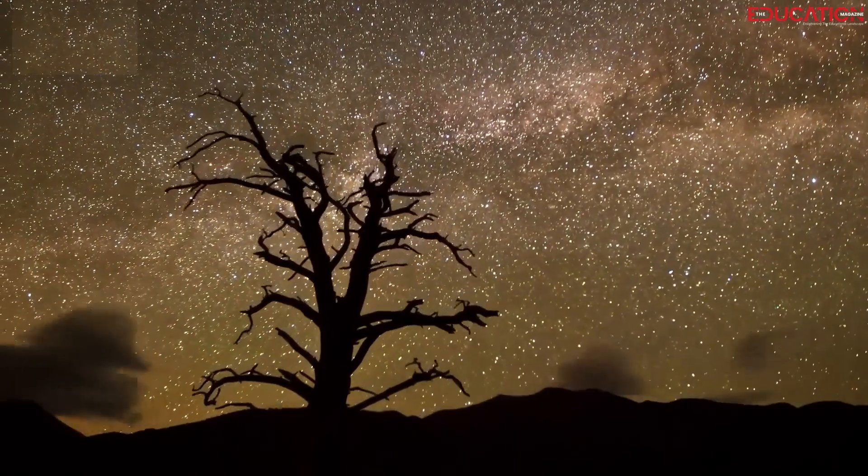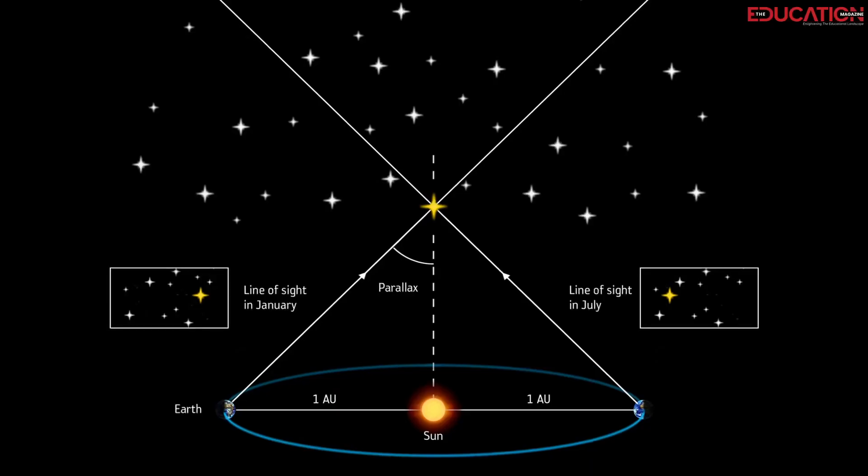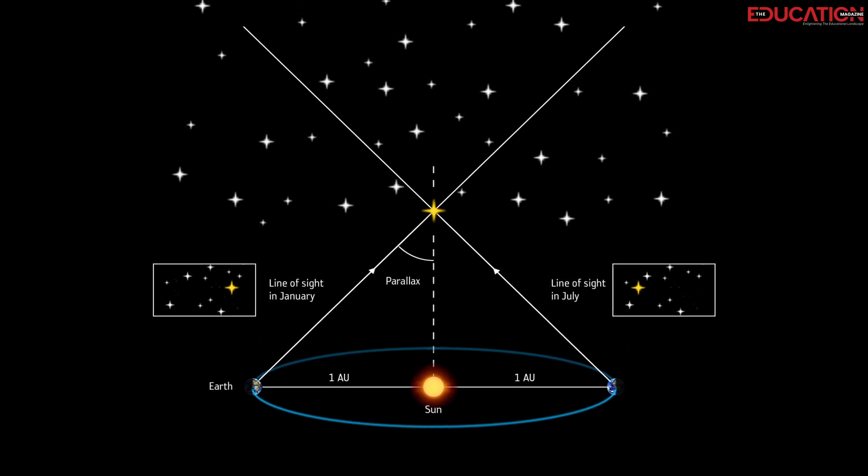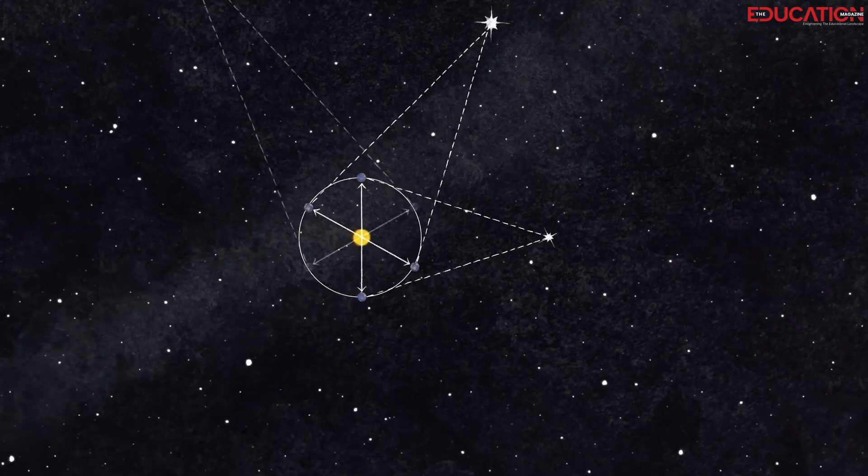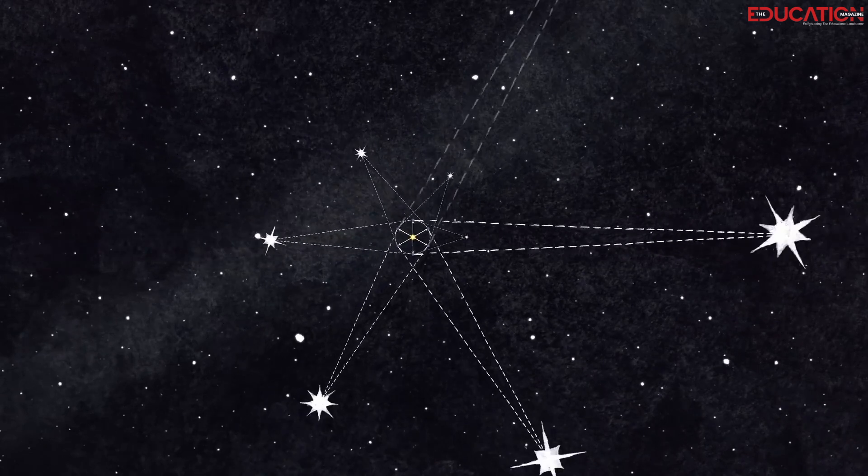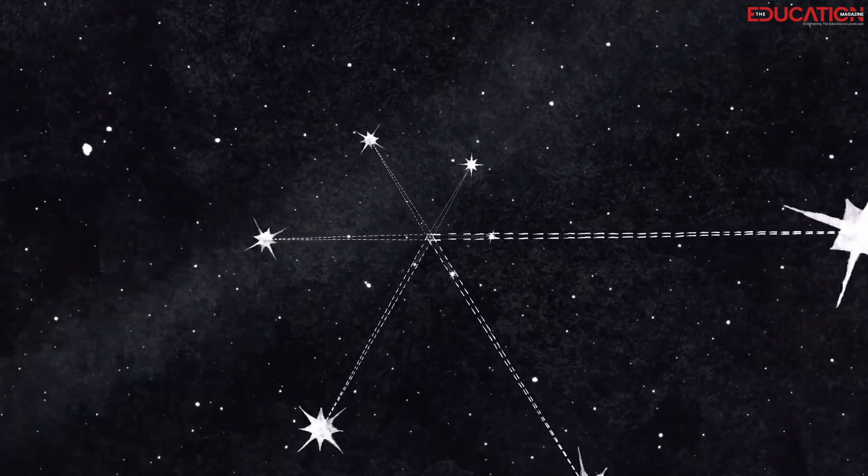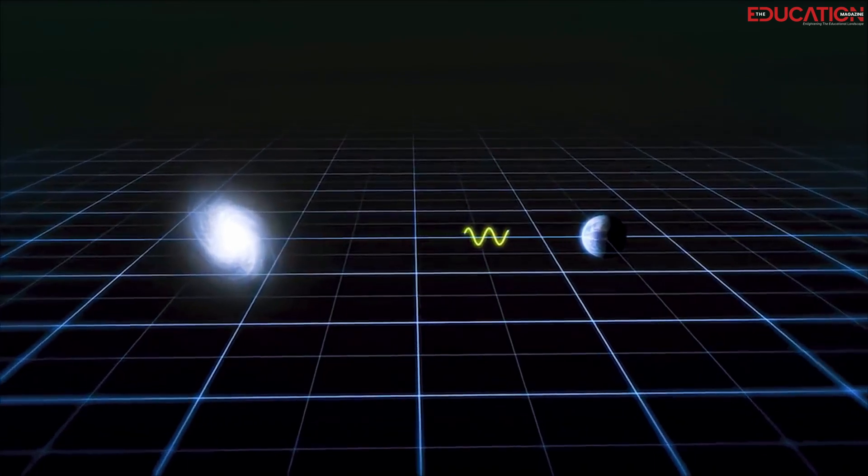Herschel used a stellar parallax technique to measure the distance to the galactic center. Stellar parallax is the apparent shift in the position of a star as the Earth moves around the Sun. By measuring the parallax of a star, we can calculate its distance from Earth.